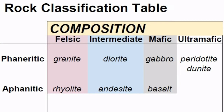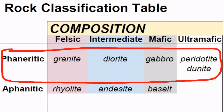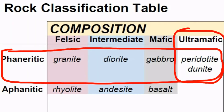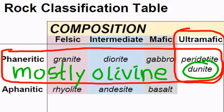In the igneous rock classification table, we restrict our choices to the coarse-grained or phaneritic row, and the ultramafic or iron-magnesium silicate column. So we have only two choices for the name of this igneous rock: peridotite or dunite.